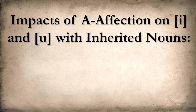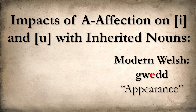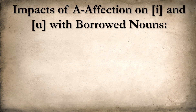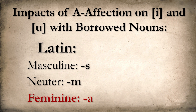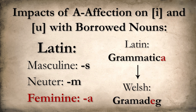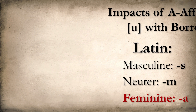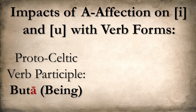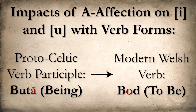The effect of A-affection on short I and U wasn't only contained in adjectives. Nouns such as 'gwaev', meaning 'appearance', started out as 'wida', meaning 'something seen'. As you might imagine, feminine Latin loanwords, which predominantly ended in A, are some other great examples of the change. For example, the Latin 'grammatica', meaning grammar, became the modern Welsh 'gramadeg'. Some verb forms were affected as well. For instance, the verbal noun 'bhuta', meaning 'being' or 'becoming', shifted to the modern Welsh 'bod', with an O. This doesn't wreak too much havoc on the verbal paradigm; however, it does mean that most of its inflections, which didn't have an ancestral A, reflect the old U vowel instead of a lowered O.